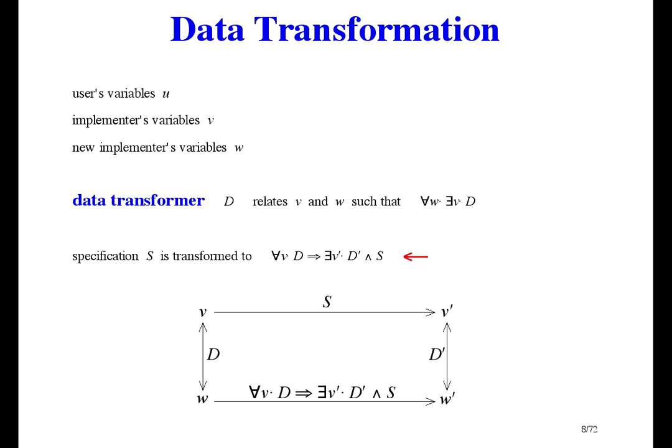In this formula, d talks about both v and w; d prime talks about v prime and w prime; and s talks about v and v prime. But the whole formula doesn't talk about v and v prime, because they're local — so it just talks about w and w prime. It says: whatever state v the user is imagining that we start in, related to w, there is a final state v prime, related to w prime, for the user to imagine as the result of s. So the user won't be surprised — the user can keep on imagining we have state space v, but really we have state space w.